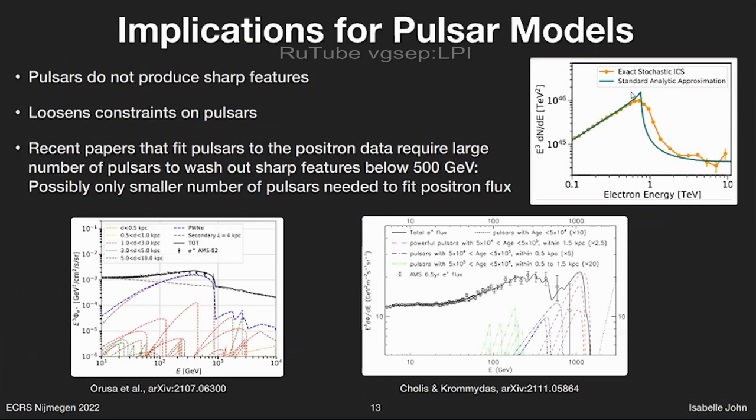This is also interesting when we come back to the question of how many pulsars contribute to the positron flux. If you want to fit many pulsars to the very smooth positron flux, you generally end up needing a large number of pulsars to wash out these sharp features. Now that we see pulsars don't produce sharp features, this opens up the possibility that maybe only a few pulsars contribute to the positron flux. We can't make a definitive statement — it could be a lot or a few — but really this result loosens the constraints on pulsars.